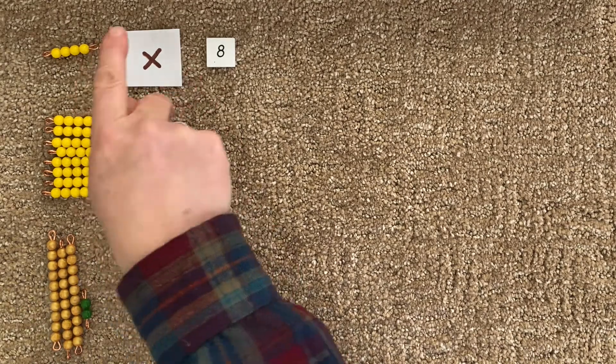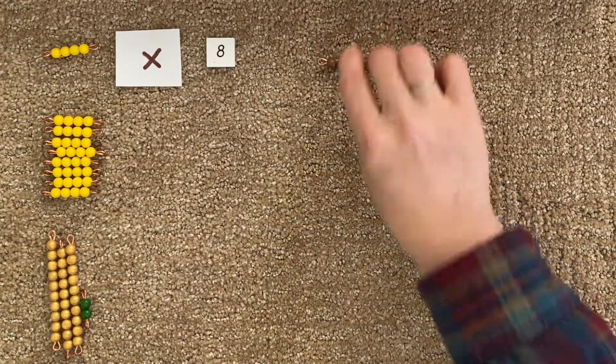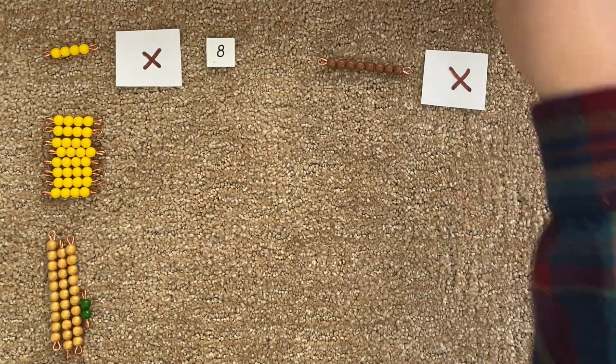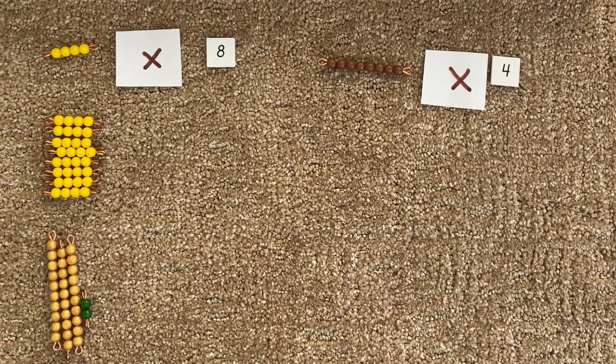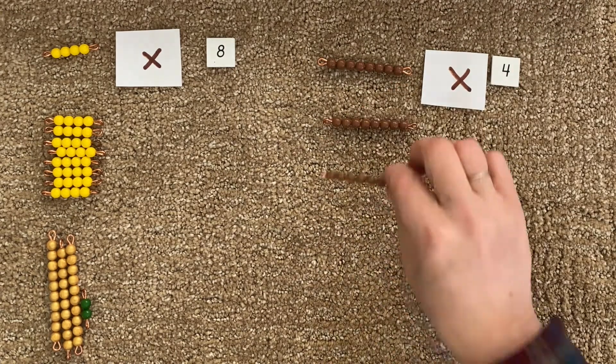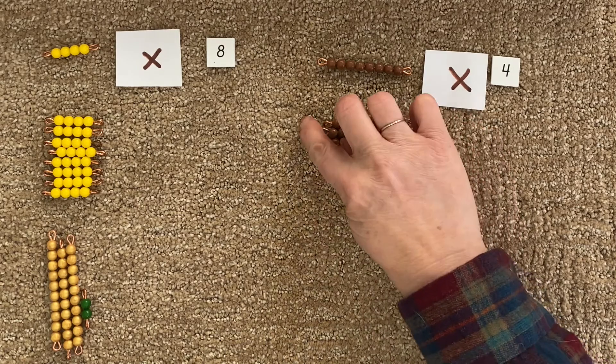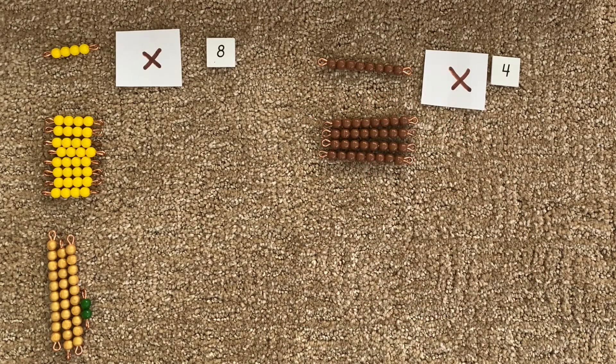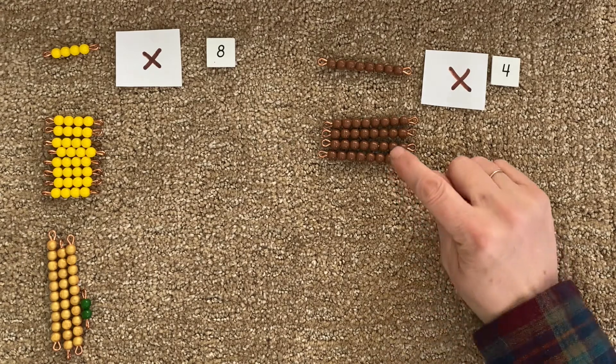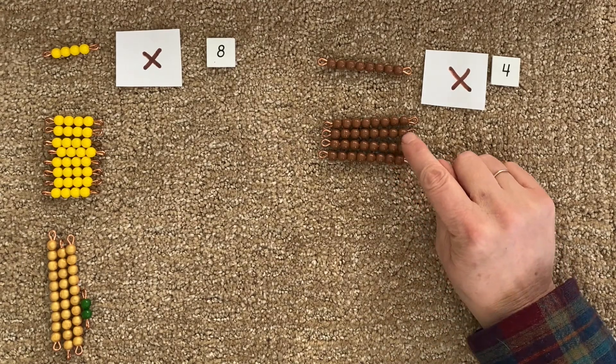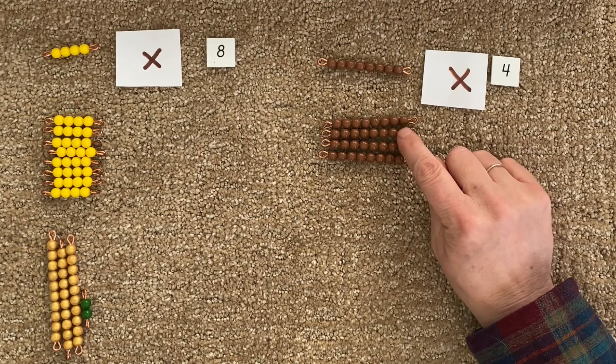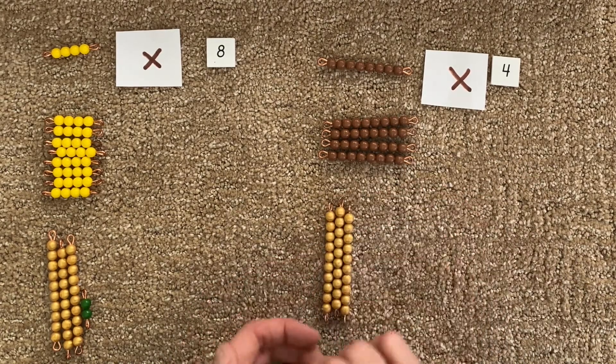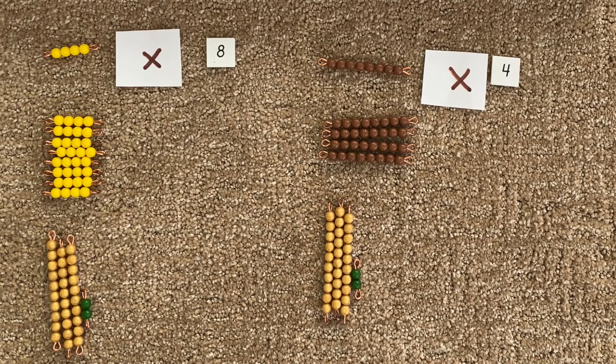Now let's see if we reverse those. We're going to take an eight bar and multiply it four times. Eight times two is 16. And 16 plus 16 again is 32. It worked for that one too.